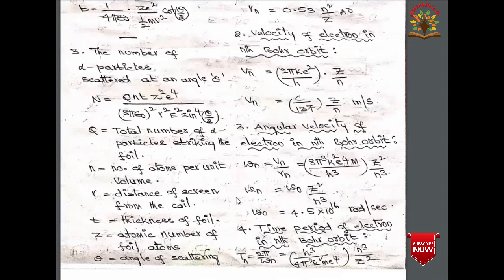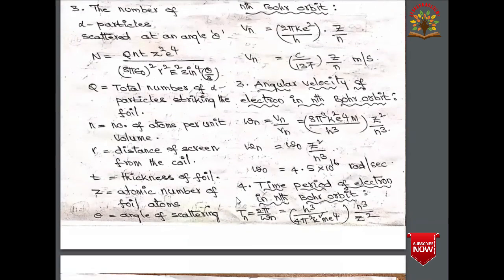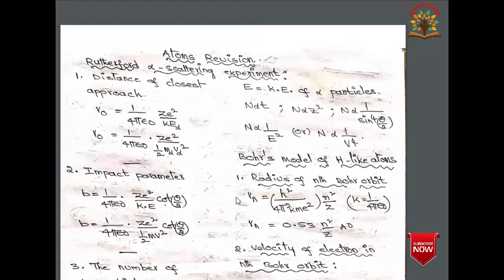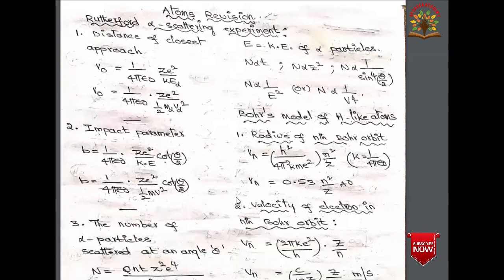The number of alpha particles scattered at angle θ is given by N = qnτZ²e⁴ / (8π²ε₀²r²E² sin⁴(θ/2)), where q = total number of alpha particles striking the foil, n = number of atoms per unit volume, r = distance of screen from the foil, t = thickness of foil, Z = atomic number of foil atoms, θ = angle of scattering, and E = kinetic energy of alpha particles.